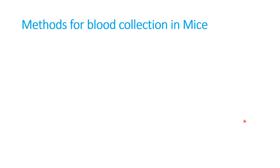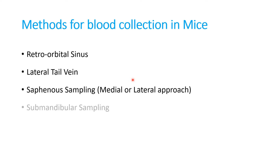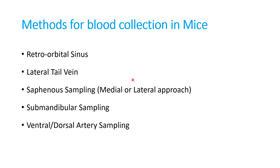Now let's see the methods of blood collection in mice. There are different methods which include retroorbital sinus, lateral tail vein, saphenous sampling, submandibular sampling, ventral or dorsal arterial sampling, and cardiac puncture. We will see each method one by one in detail.